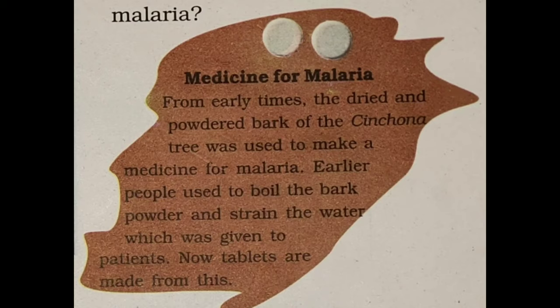Earlier, people used to boil the bark powder in water, then strain the water, which was then given to patients. They would take out the bark from the cinchona tree, use the bark powder in water, boil it, and then strain it to prepare the remedy.